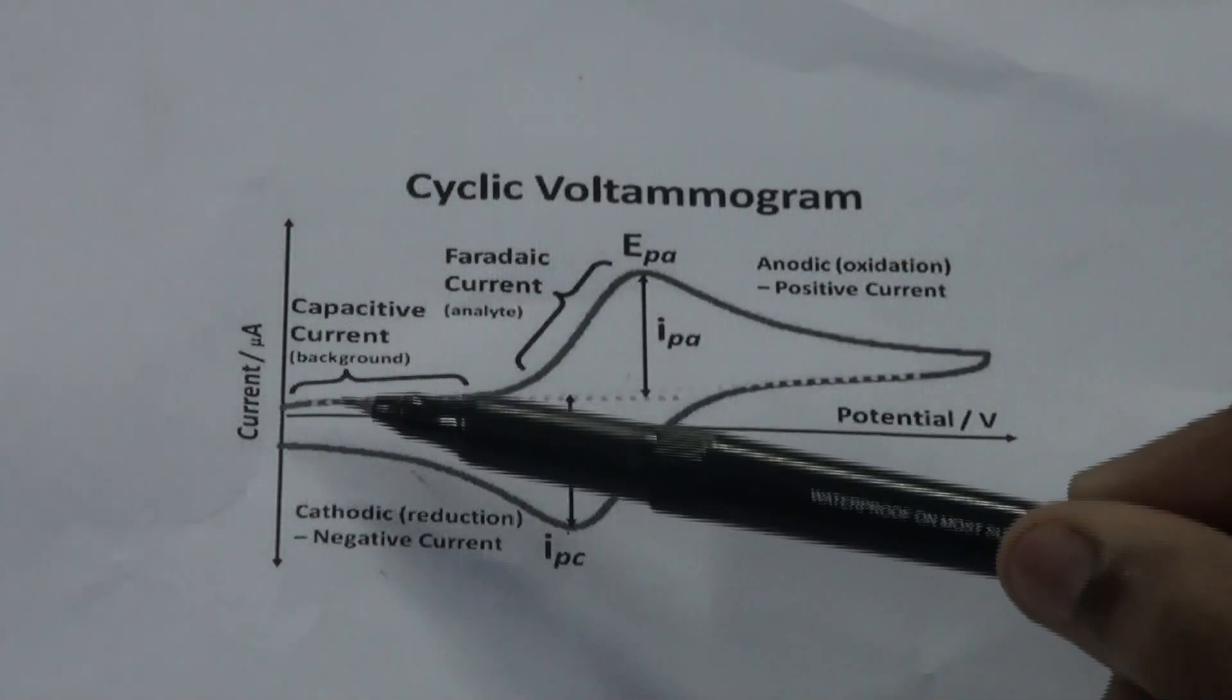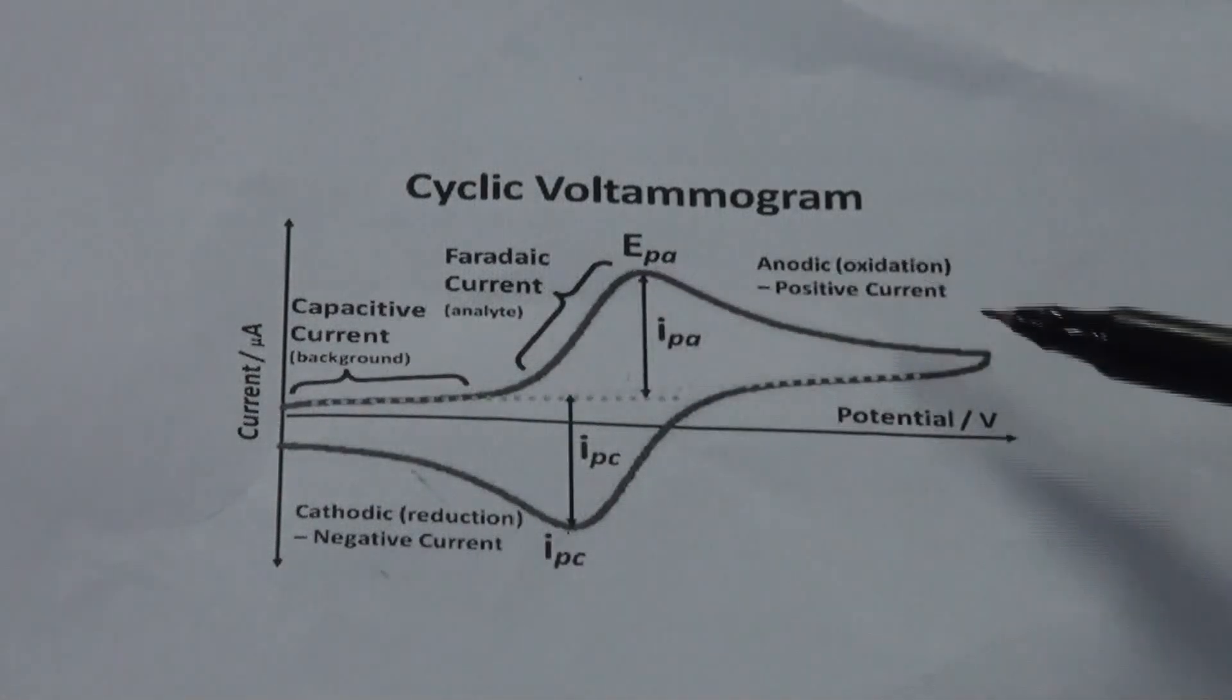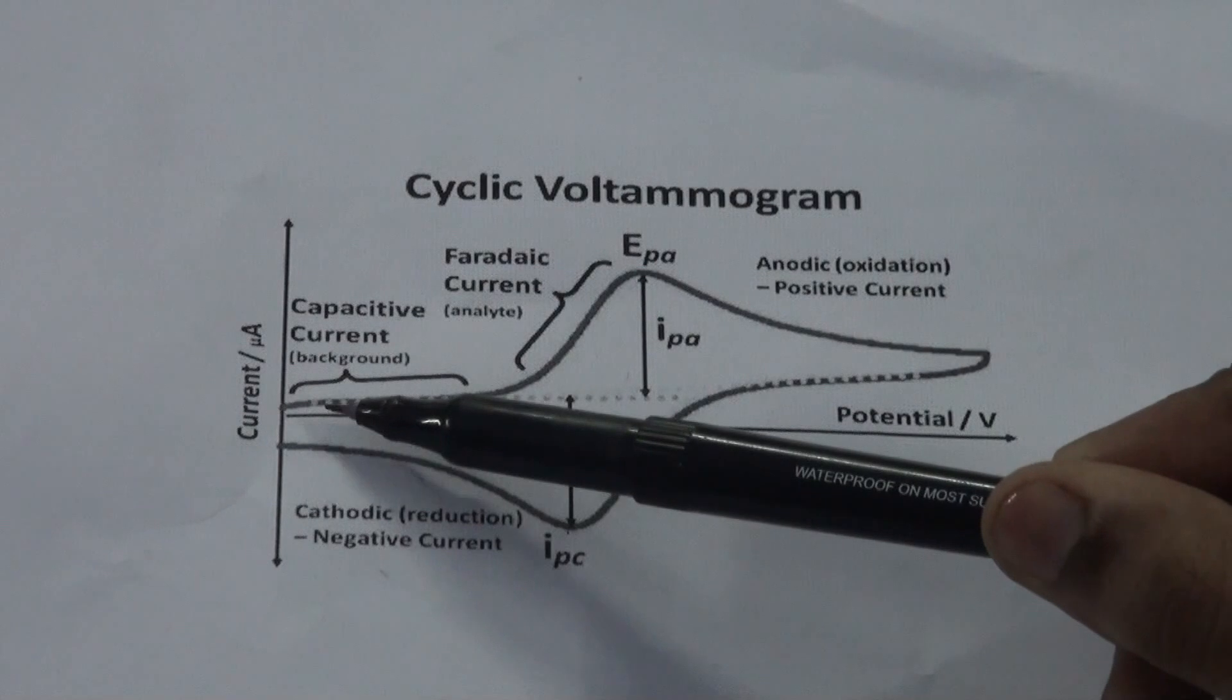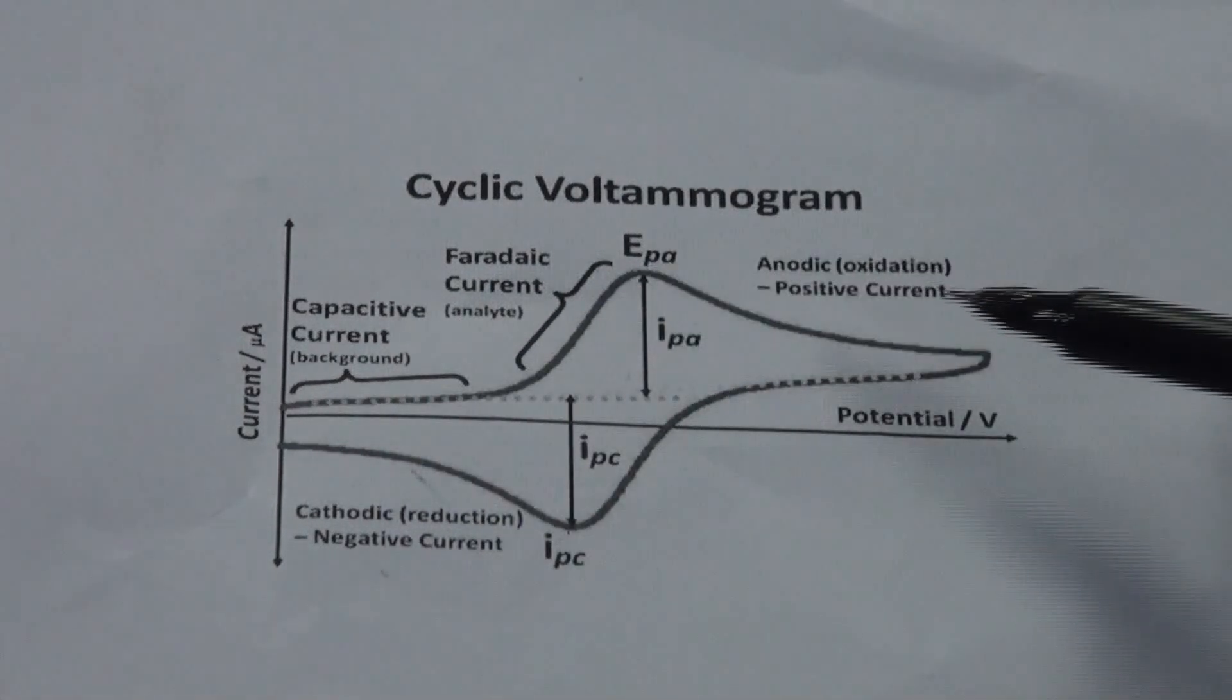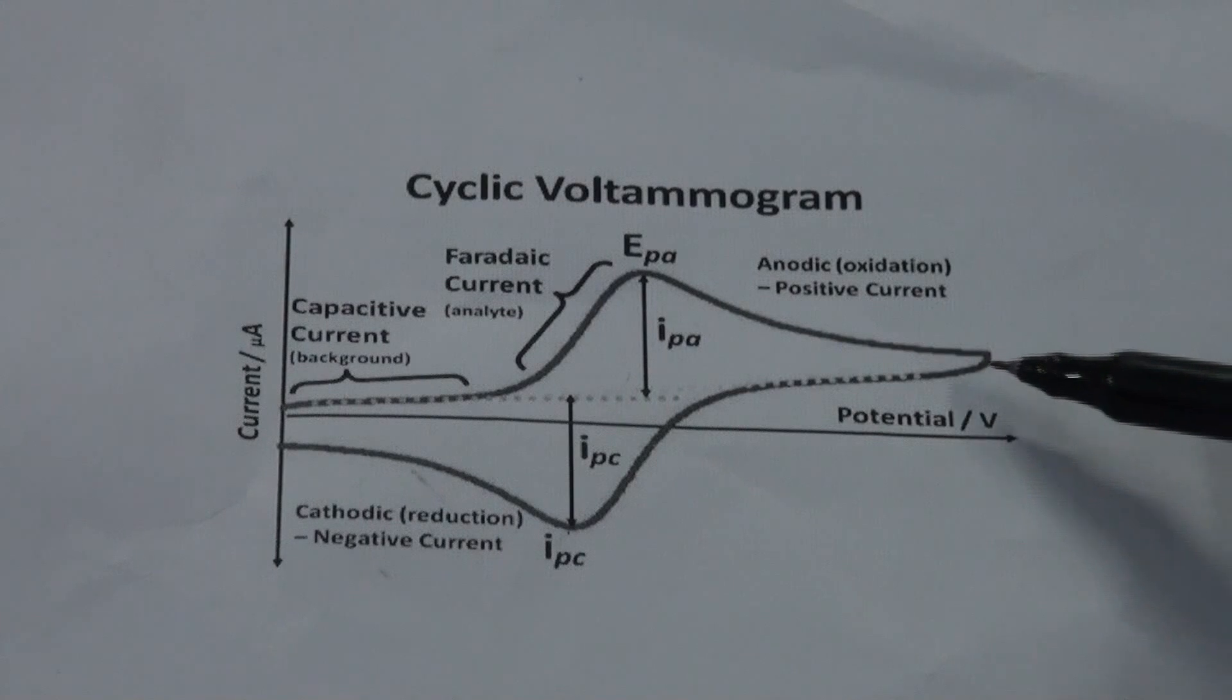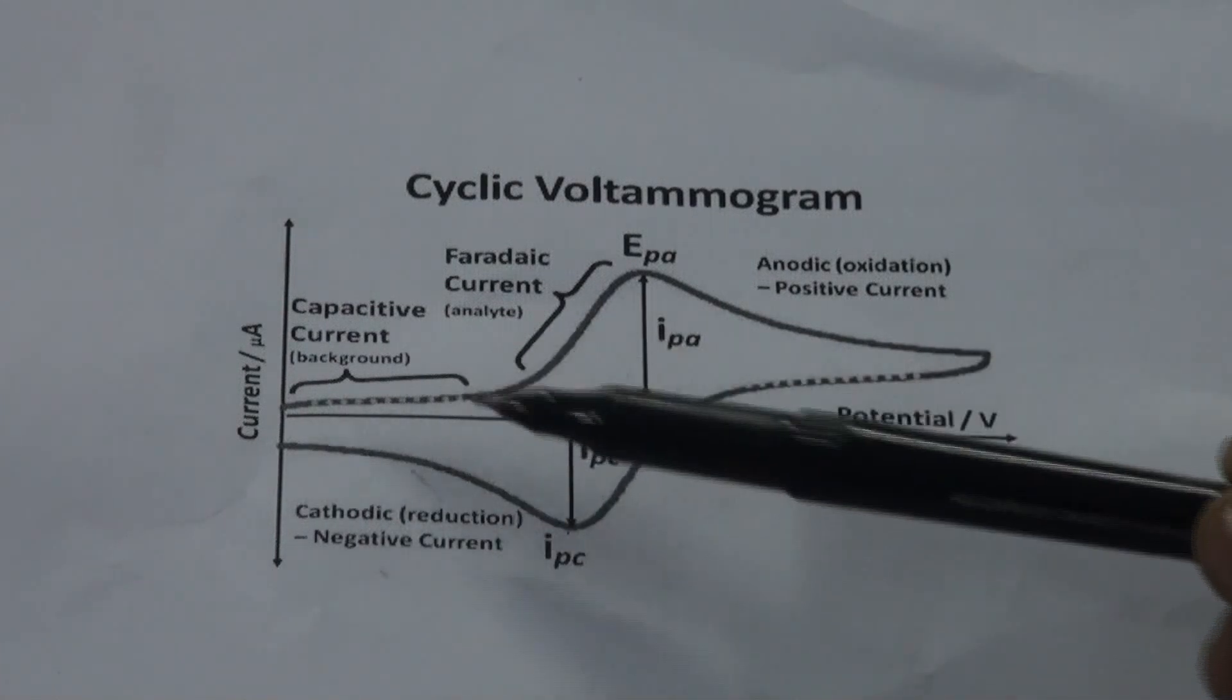We have provided the potential from V1 to V2. V1 can be called the initial potential, and V2 is the set potential or the vertex potential from where the ramp inverses.